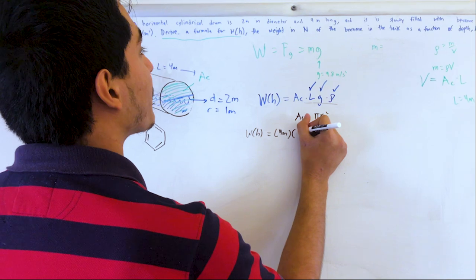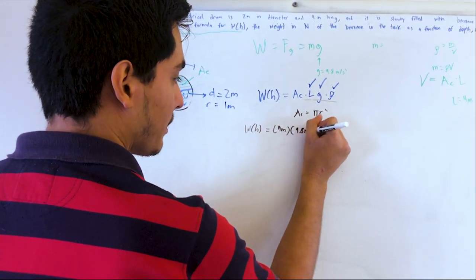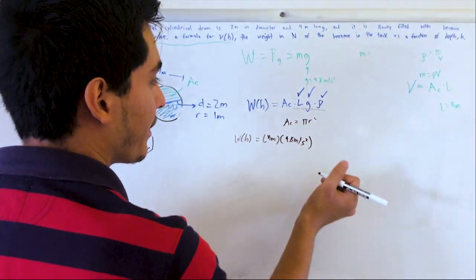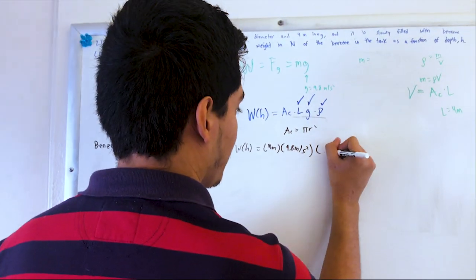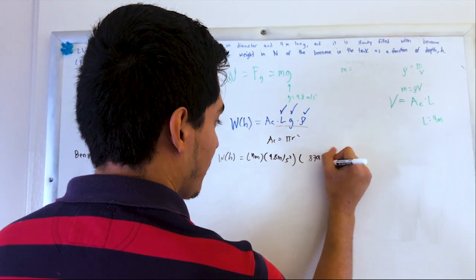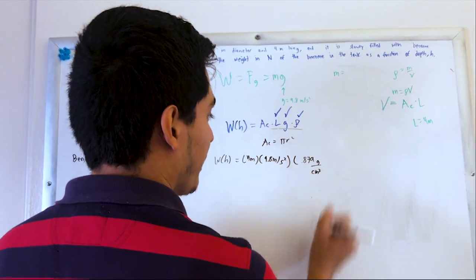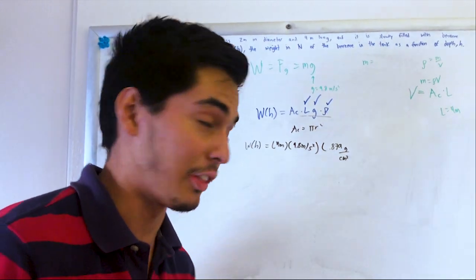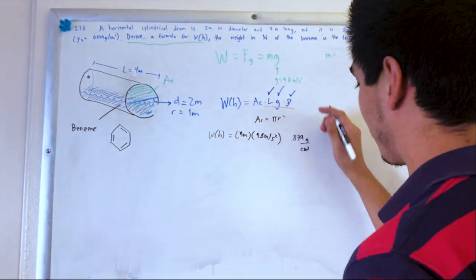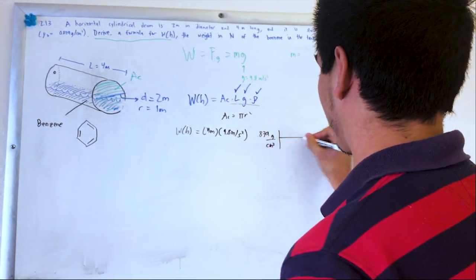Gravity is 9.8. Why am I thinking about that? And the density is 0.879, 0.879 grams per centimeter cubed. And we want this in Newton, so that means it's gonna be SI units finally! Thank you! I hate dealing with American units, alright? So that means I'm just gonna convert this.